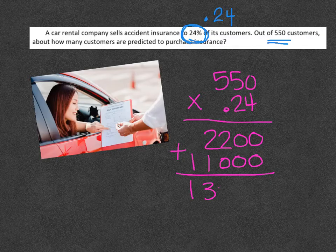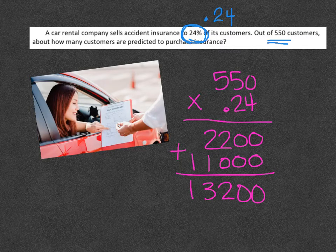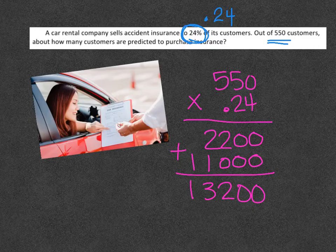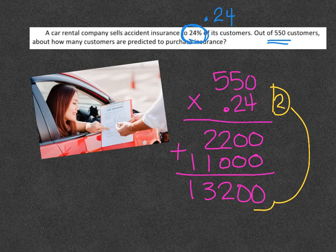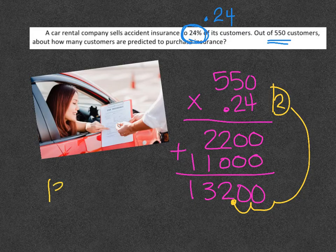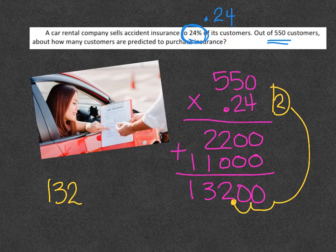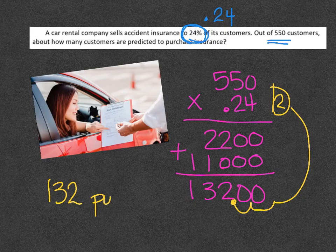That is 13200. But remember that I have two digits behind the decimal, so I'm going to have to come down here, put in. My answer is going to be 132 will purchase insurance.